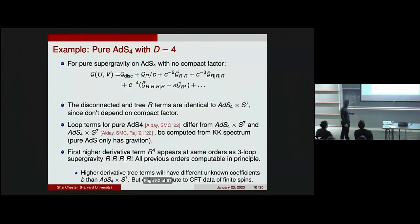That concludes the discussion of the large C expansion of the four-point function, equivalently the small Planck length expansion, equivalently the corrections to the Einstein equations. Everything discussed so far applied to any theory with massless spin-2 particles or less, and only depended on the bulk dimension.